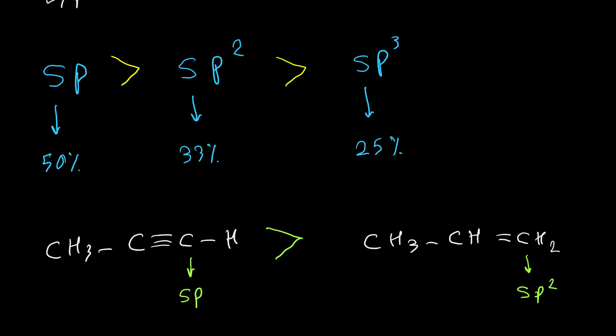For basic property, everything is reversed. If you have resonance, it causes less basic property. If you have a more electronegative atom, it has less basic property. Let's have a series of examples for both acidic and basic property in organic molecules.